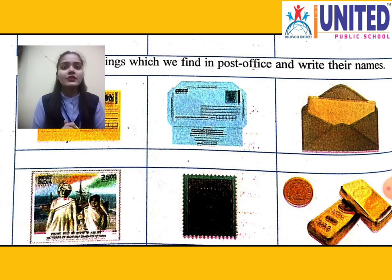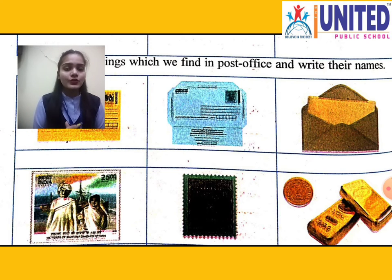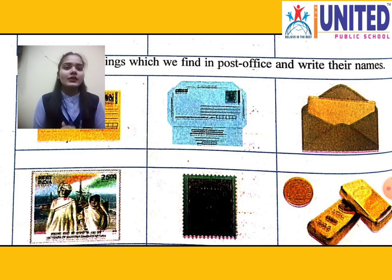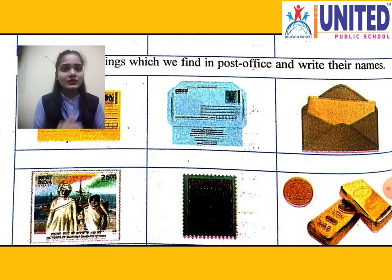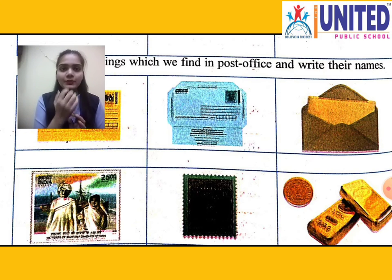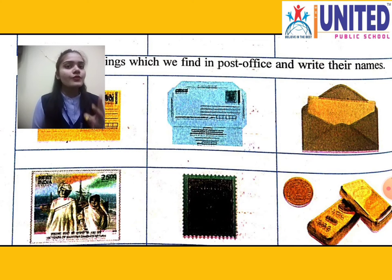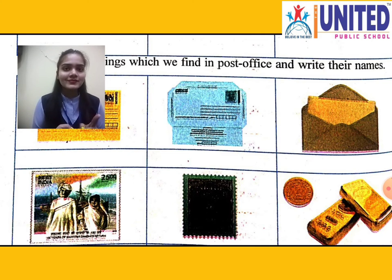The fourth picture is of speed post. Whenever we need to send something urgently to a friend, we use speed post. The fifth and sixth items are not found in the post office. So, only the first, second, third, and fourth pictures — post card, inland letter, envelope, and speed post — are found in the post office.